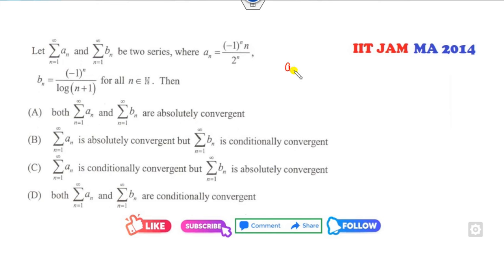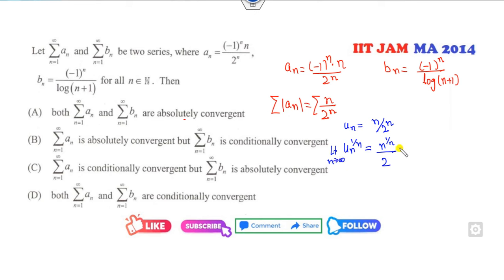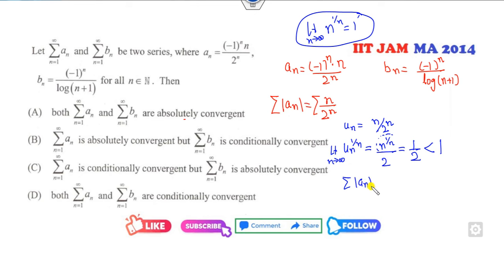The sequence a_n = n/2^n and b_n = (−1)^n · log(n+1). To check convergence of the series of a_n: let u_n = n/2^n and apply the root test. The n-th root of n as n→∞ is always 1, so the result is 1/2, which is less than 1. Since I take the modulus, this series is absolutely convergent. The conditional convergence options are therefore cancelled.